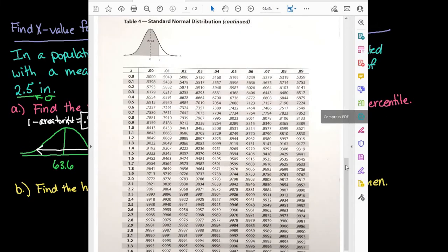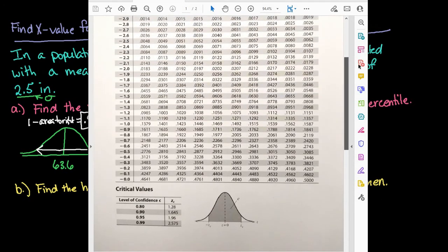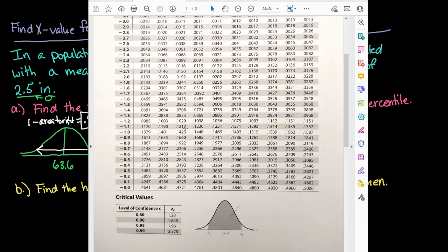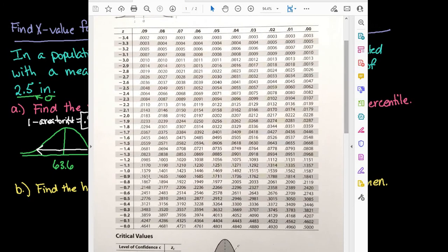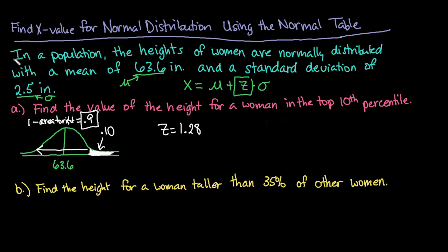You could have looked at the opposite z-score, just looked for the 0.10 that was given and then reported the opposite z-score. So if you notice right here that 0.10 is between 0.0985 and 0.1003. It's closer to the 0.1003 and so what I would do is I would go across to get the negative 1.2 and I would use the 8 at the top and remember we would want to report the opposite z-score because we want the positive value for this one.